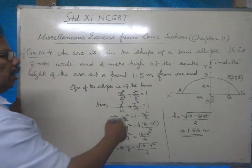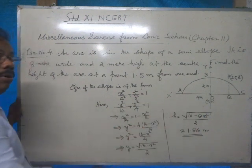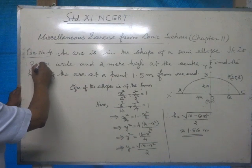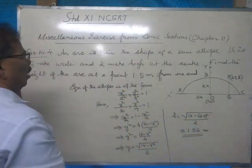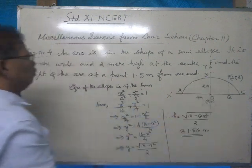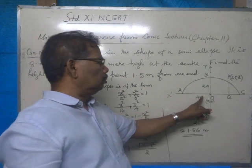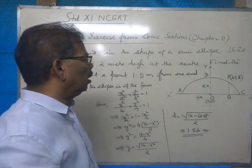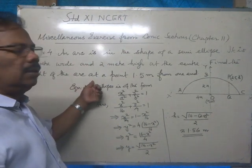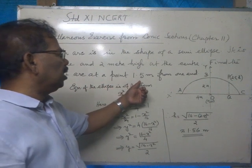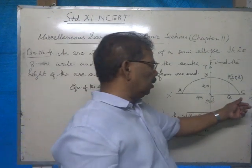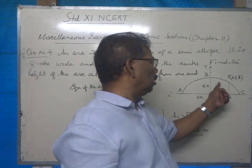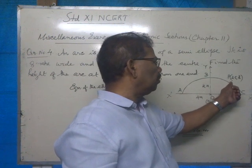You are given an arc in the shape of a semi-ellipse. It is 8 meter wide and 2 meter high at the center. The height is 2 meter at the center of the arc. Find the height of the arc at a point 1.5 meter from one end — we shall consider as the right end. 1.5 meter from that end means that particular point will be 2.5 meter from the y-axis.